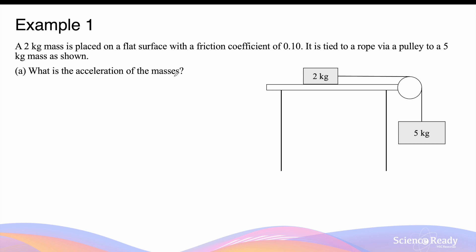Let's first start by identifying the types of forces and the directions on the two masses. Starting with the 2kg mass, we have its weight force, which is 2g, and a normal force exerted by the surface on the 2kg mass. It also experiences a tension force due to the rope directed to the right, and a frictional force due to the surface.